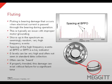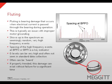Fluting is a condition that occurs when an electrical current is passed through a bearing during operation. It is typically caused by improper motor grounding and will show up in the vibration spectrum as seemingly random, very high-frequency events. The spacing of these high-frequency events is a key indicator, and they will be spaced at ball-pass frequency outer race, ball-pass frequency inner race, or both. The acceleration G levels can be very high and can be easily missed with routine data collection. Fluting can often be heard, and if properly trended, this damage can exist without failure for a significant amount of time.